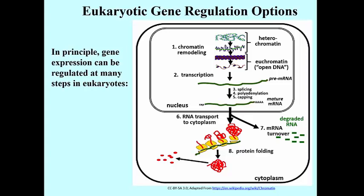There are also other aspects: protein folding, transport, and activation. Proteins must assume their correct three-dimensional shape, and this is often facilitated by proteins called chaperone proteins, which are themselves subject to regulation. All of this must be correctly controlled to yield the final active protein. Additionally, the proteins that are produced will also be degraded, and controlling the rate of protein degradation is yet another way to control gene expression — determining how much of a polypeptide is actually present in a cell at any given moment.